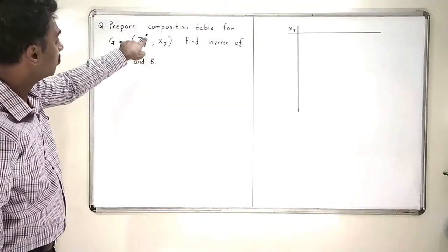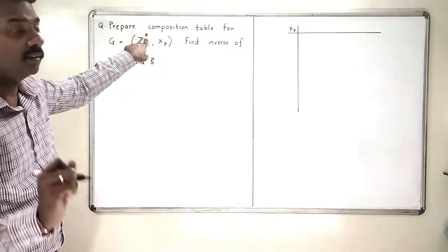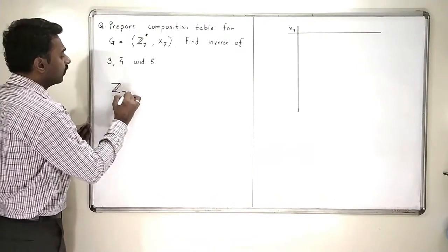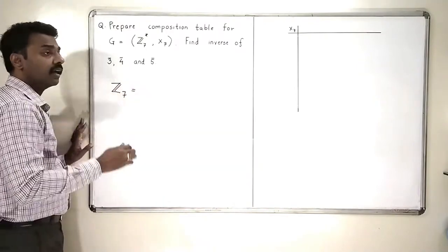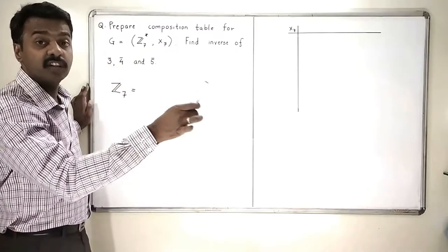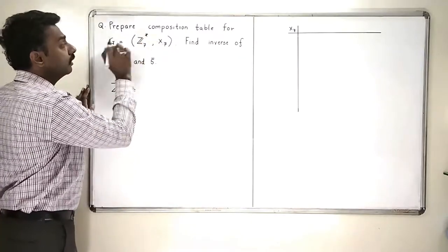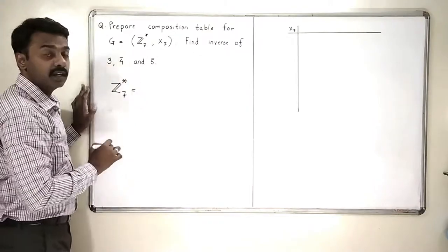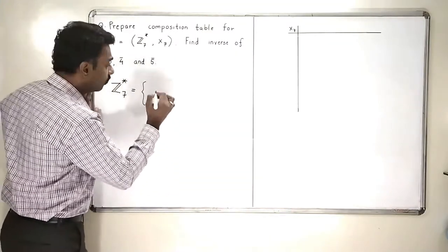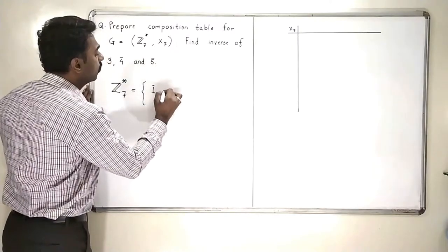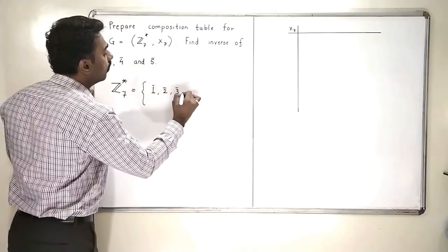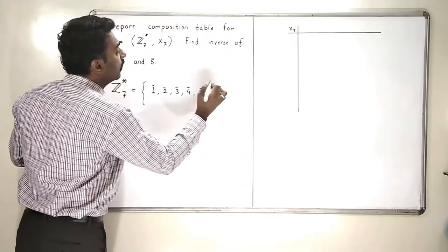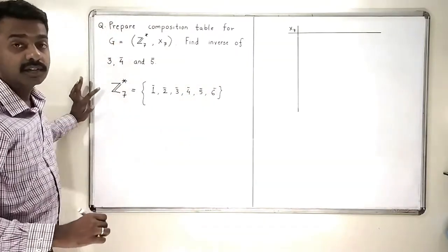Now, Z7 star means I am going to omit the 0 element from that. So, what are the elements of Z7? The elements of Z7 are 0 bar, 1 bar, up to 6 bar. But we are omitting 0 because of this star. So, what are the elements of Z7 star? Now, 0 is omitted. So, I will get 1 bar, 2 bar, 3 bar, 4 bar, 5 bar and 6 bar. So, these are the elements of Z7 star.